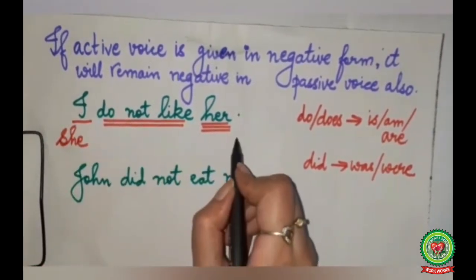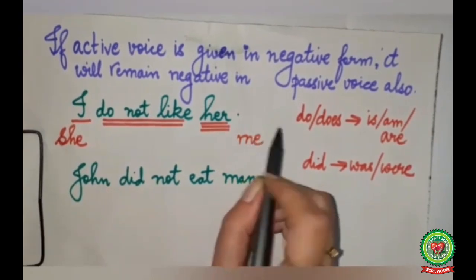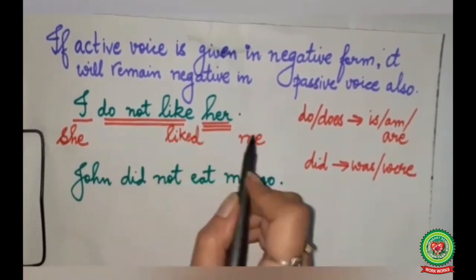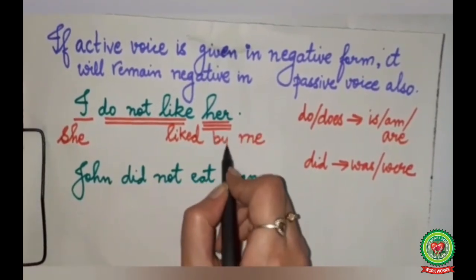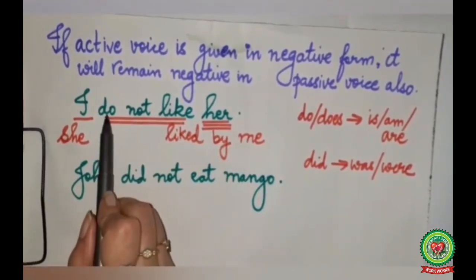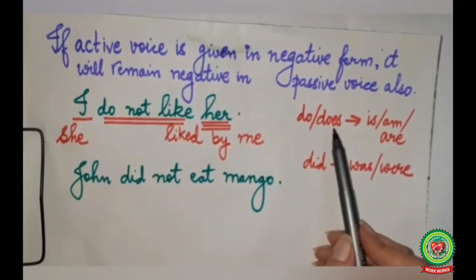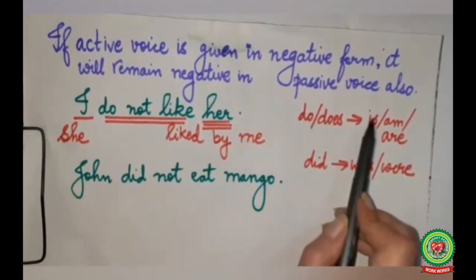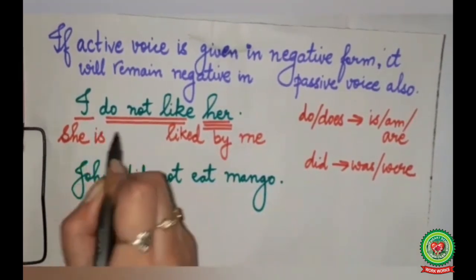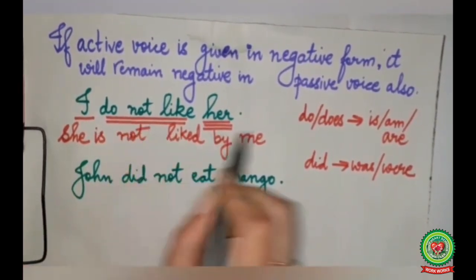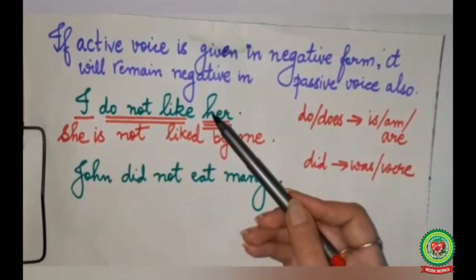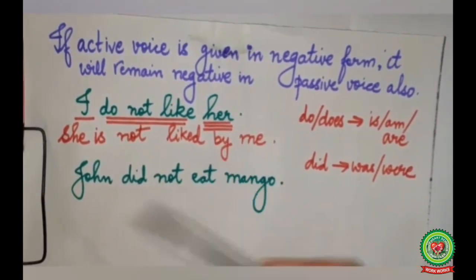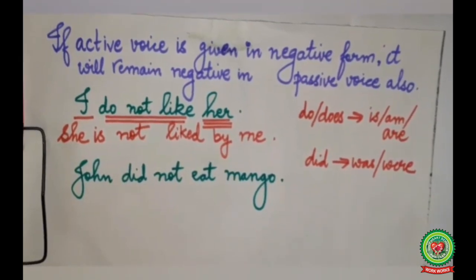I will go to the last and will become me. Like will change into liked. Before me we add the word by. Do is present form of verb; do and does change to is, am, are. So with she we will use is. The sentence becomes: She is not liked by me. Active voice is negative, passive is also negative.